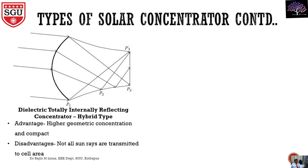Then the dielectric totally internally reflecting concentrator — this is called the hybrid type. Why hybrid type? It has both refraction and reflection. The light is passing and refracted, then reflected here. The focus point will be reflected by 2P2 and then reflected to 2P3. Similarly in all cases it will be reflected here, so both refraction and reflection happen.